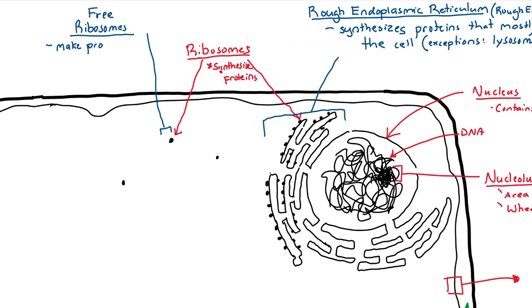The free ribosomes, they make proteins that will stay in the cell. These proteins usually get incorporated into the organelles and allow the organelles to carry out their functions.